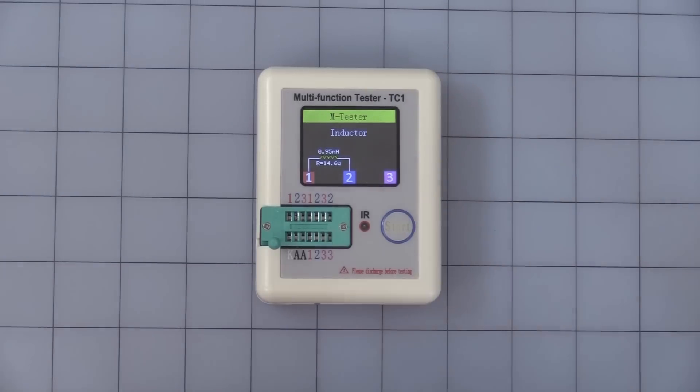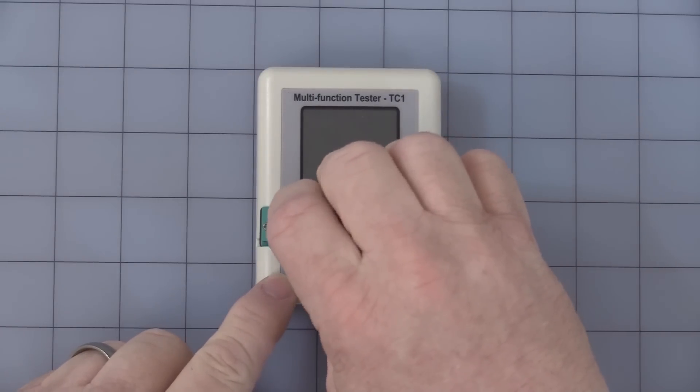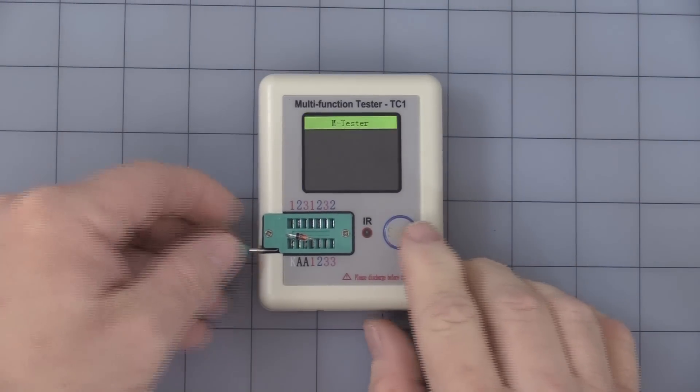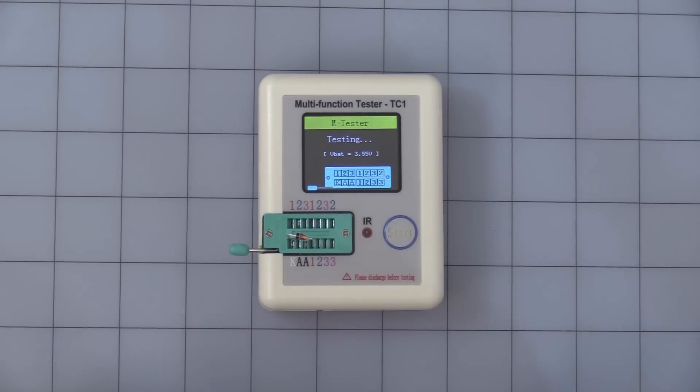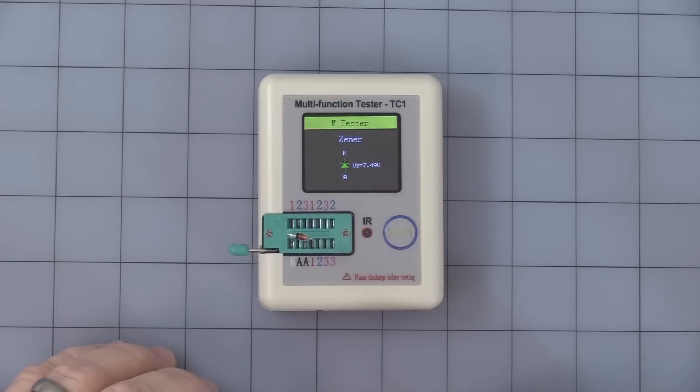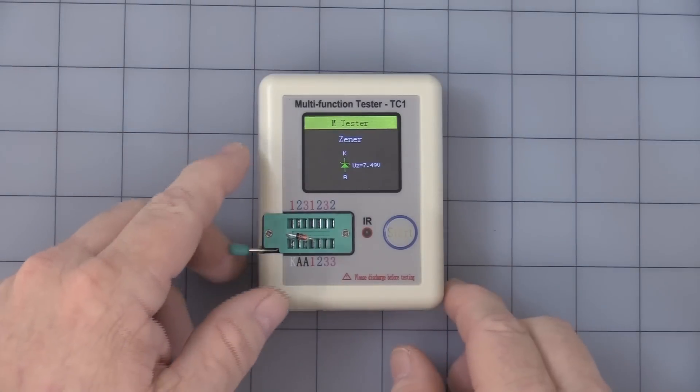Next is the zener diode. Like we talked about earlier, K for cathode, anode, anode. This is the only one you do have to have the polarity in correctly. This section is for zener diodes only. As you see, it tested at zener, recognized it, 7.45 volts. Yes, that's a 7.5 zener diode.